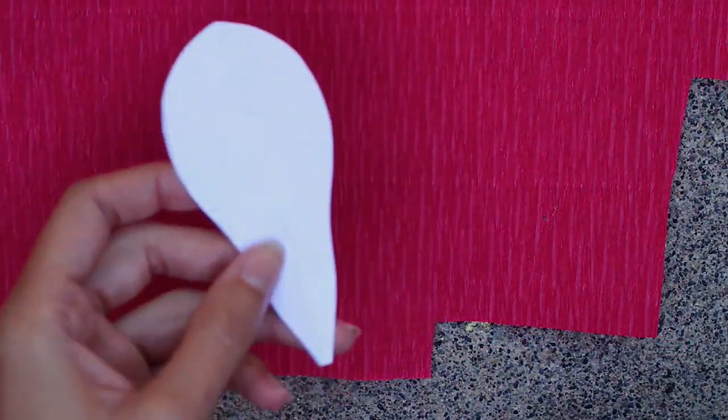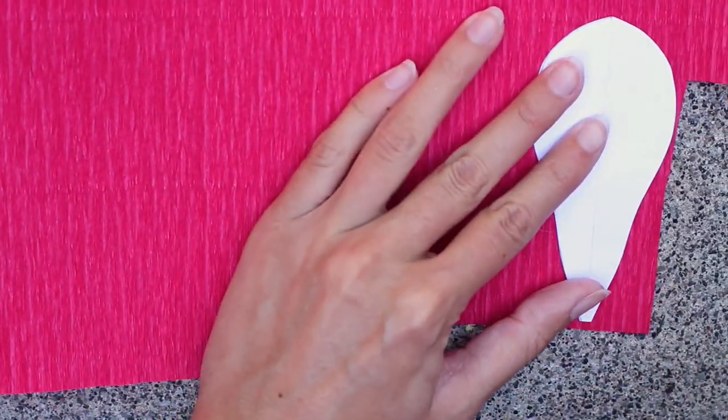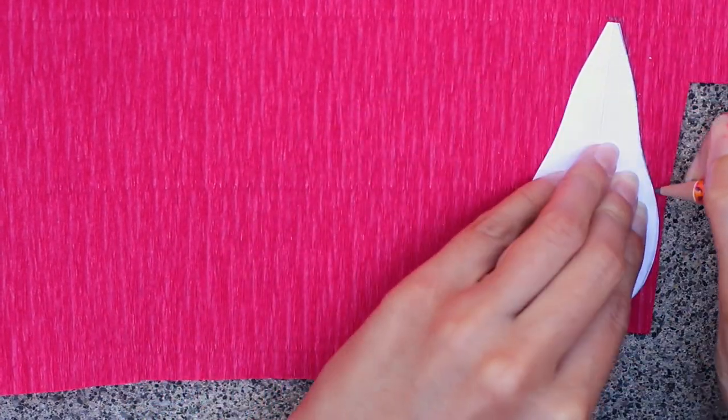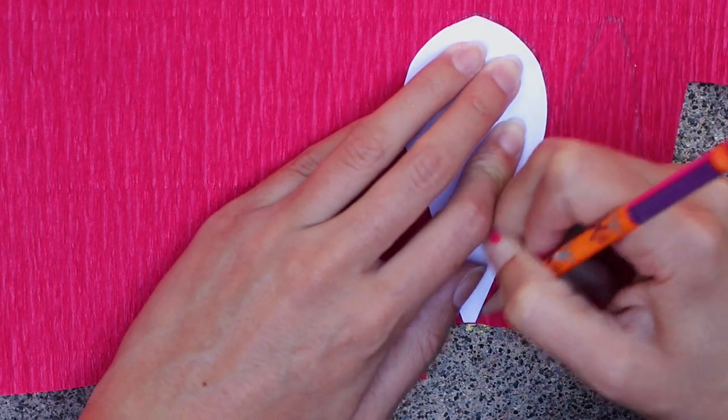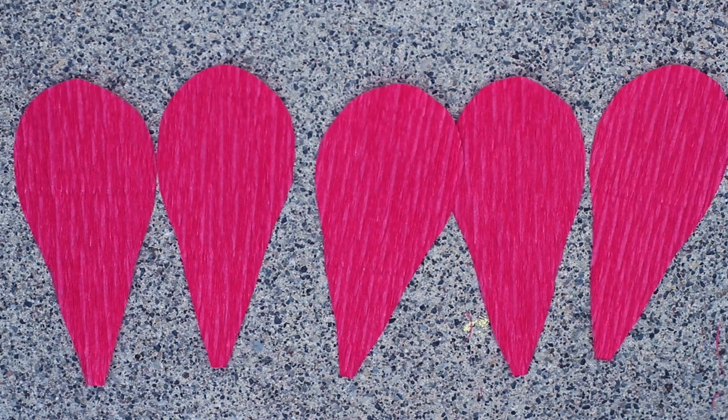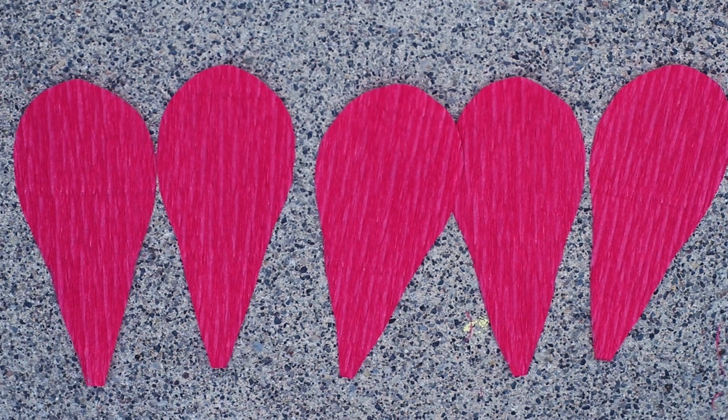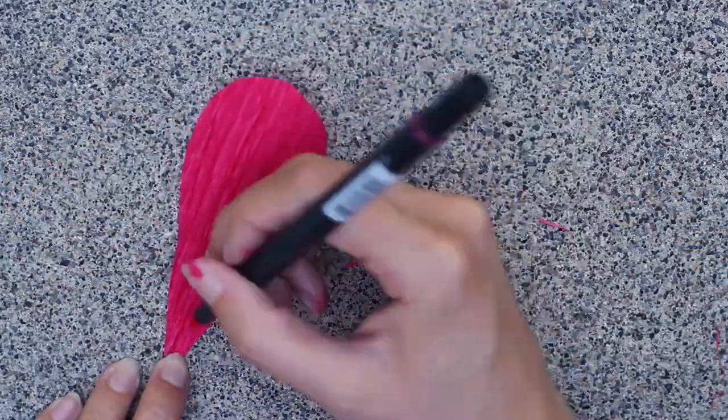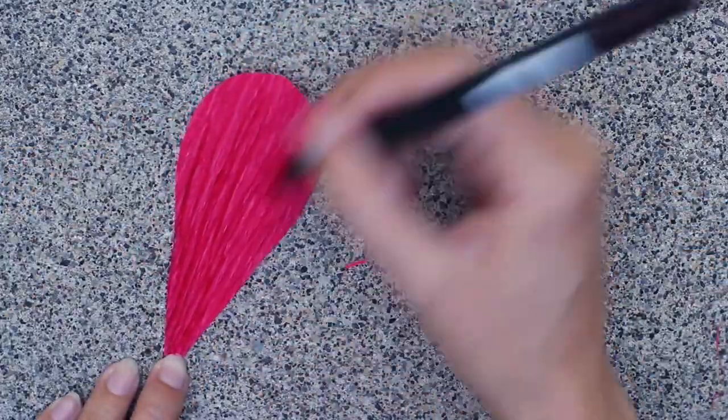Next, we're going to create the petals. We'll be making five of these. Make sure you have the paper so the crepes are going vertically. Then just trace five and cut all of those out. Once you've done that, take one of the petals. I'm taking a Tombow marker and drawing vertical lines on it just to add some more color to the petal.